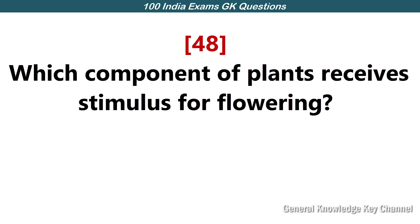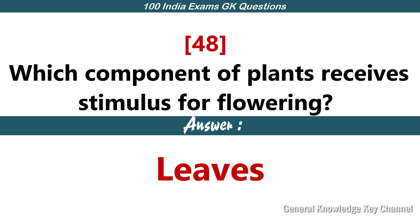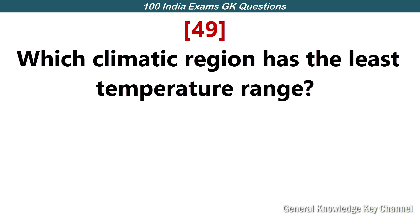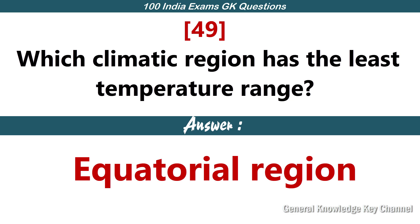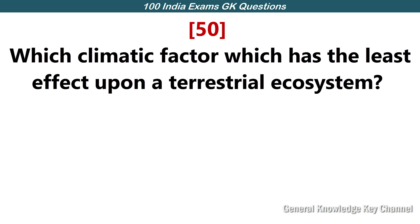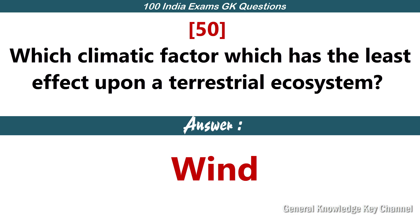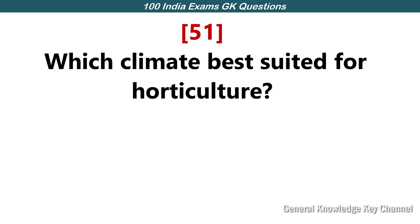Which part of plants receives the stimulus for flowering? Leaves. Which climate region has the least temperature range? Equatorial region. Which climate factor has the least effect upon a terrestrial ecosystem? Wind. Which climate is best suited for horticulture? Mediterranean.